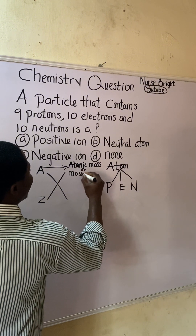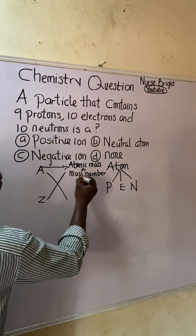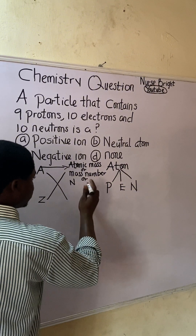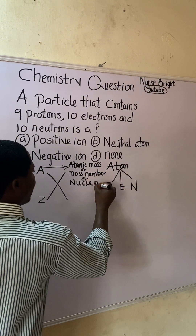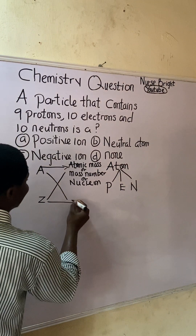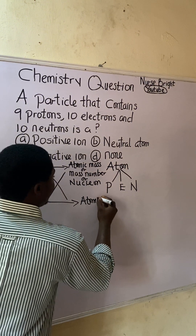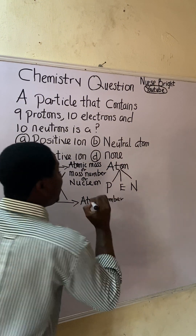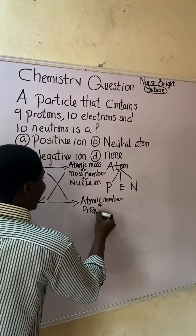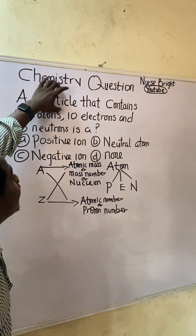A is called the atomic mass — or we can call it mass number, or the nucleon number. Take note: nucleon number. Z is simply called the atomic number. If I don't call it atomic number, I will simply call it the proton number.